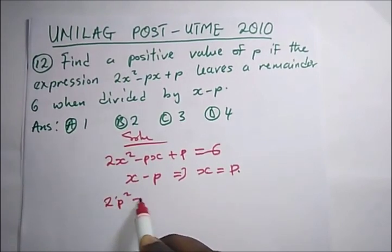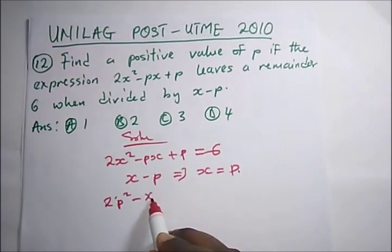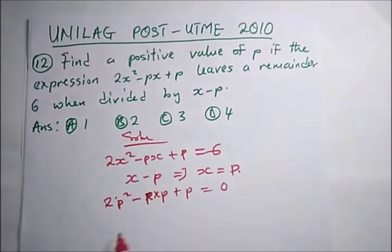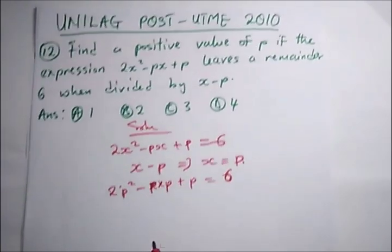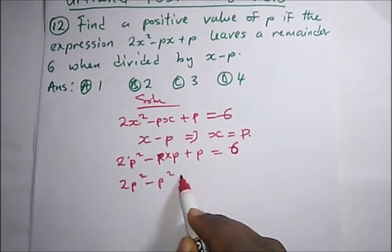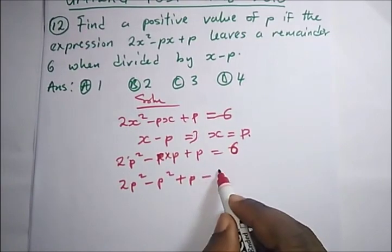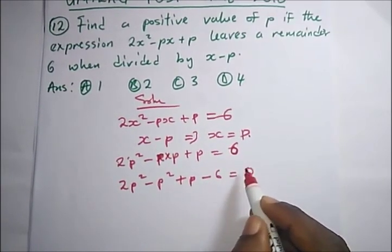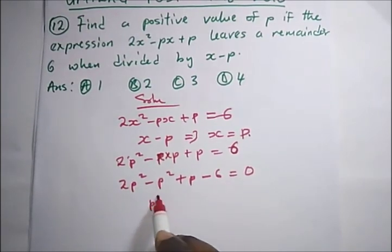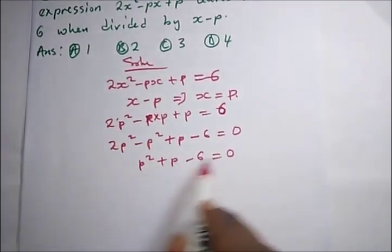Substituting x = P: 2P² − P·P + P = 6, which gives 2P² − P² + P = 6. Bringing 6 to the left side: P² + P − 6 = 0.